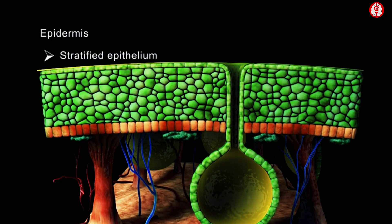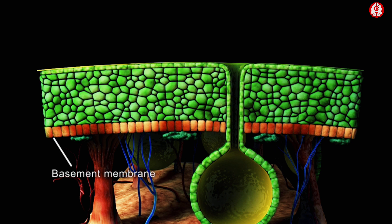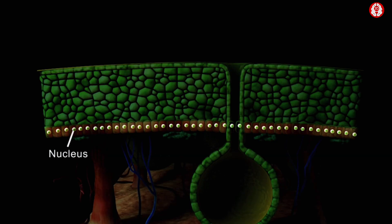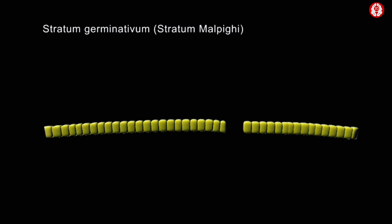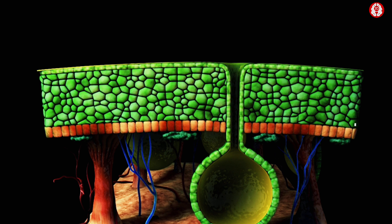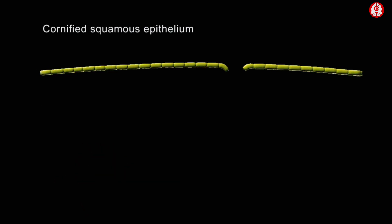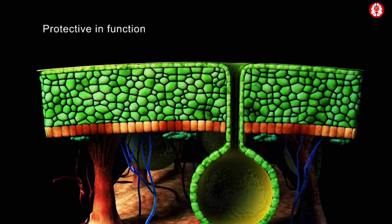The epidermis is formed of stratified epithelium, which arises from the ectoderm. It forms the compactly cellular outer region of the skin. The innermost layer of cells of the epidermis rests on the basement membrane and consists of more or less columnar cells having large, distinct nuclei. The cells of this layer, being capable of dividing, the layer is called stratum germinativum or the stratum malpighi. Its cells divide and produce new cells which are pushed continuously towards the outer surface. The outer layer of cells forms the cornified squamous epithelium, which is protective in function. The outermost layer is called stratum corneum.